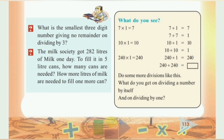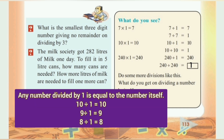Observe: 7 divided by 1 equals 7. 10 divided by 1 equals 10. 240 divided by 1 equals 240. Any number divided by 1 is equal to the number itself. For example, 100 divided by 1 is equal to 100.